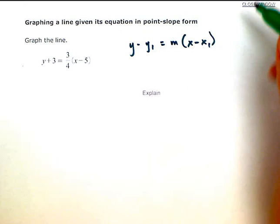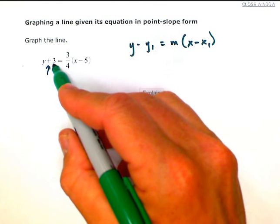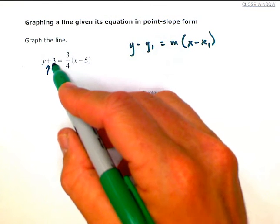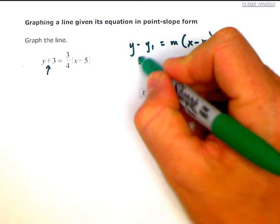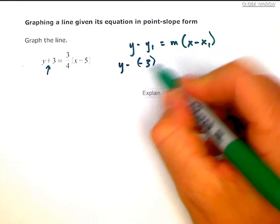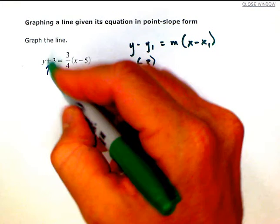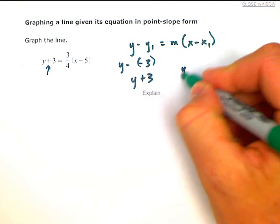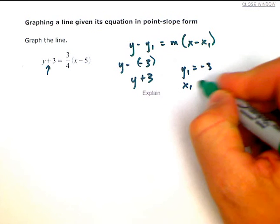The only really tricky thing here is we have a plus sign, which means that we have a negative value. When you plug in negative 3 in here, you would get Y minus a negative 3, which would become Y plus 3. So your Y1 is going to be negative 3, and your X1 is going to be 5.